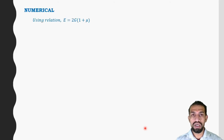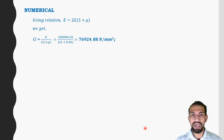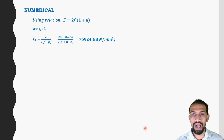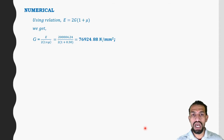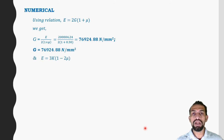Using the relation E = 2G(1 + μ), rearranging gives G = E / [2(1 + μ)]. Substituting the values, G = 76,924.88 N/mm².